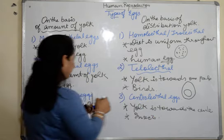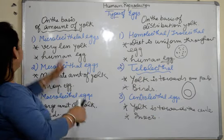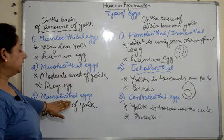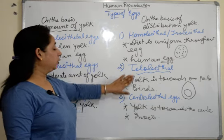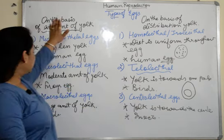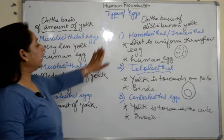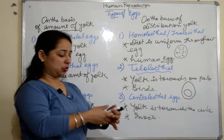So these are the different types of eggs: micro lecithal, meso lecithal, and macro lecithal — this division is on the basis of amount of yolk; and homo lecithal, telolecithal, and centrolecithal — this division is on the basis of distribution of yolk.